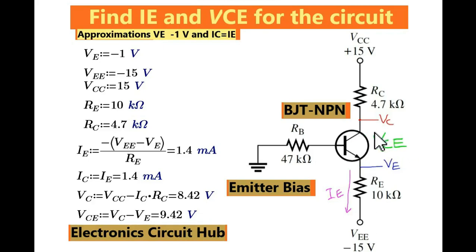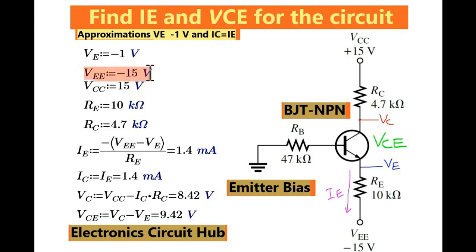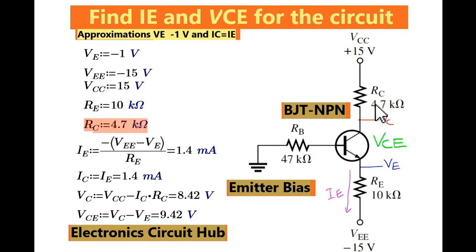You are asked to find out the value of VCE. So let us first understand what is given in the circuit. VBE equals minus 1 volt — that is given in your circuit. You are also given IC equals IE. Now the supply voltages are: VEE equals minus 15 volt, VCC equals plus 15 volt. And RE equals 10 K, RC equals 4.7 K.